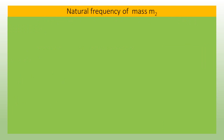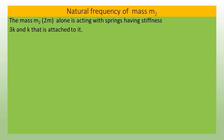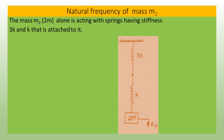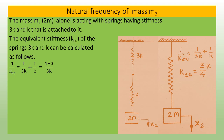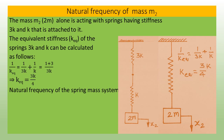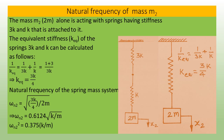For mass m2: mass 2m acts with springs 3k and k in series. The equivalent stiffness is calculated as 1/k_eq = 1/3k + 1/k, giving k_eq = 3k/4. The natural frequency is ωn2 = √(3k/4 / 2m), which simplifies to ωn2 = 0.6124√(k/m), giving ωn2² = 0.375 k/m.